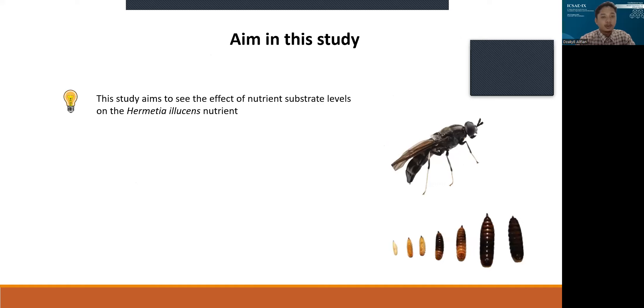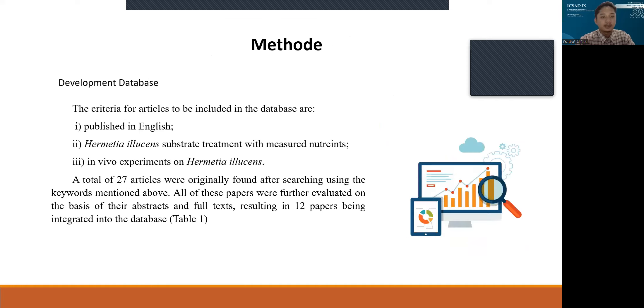This study aims to assess the effect of nutritional substrate level on Hermetia illucens nutrient. The method development database criteria for articles to be included are published in English, Hermetia illucens substrate treatment with measured nutrients.